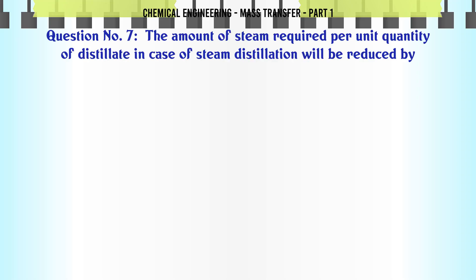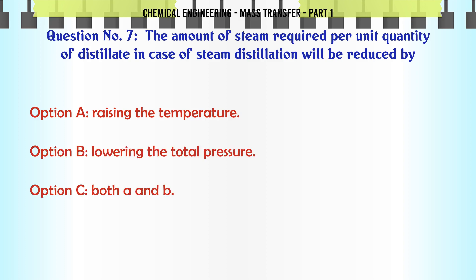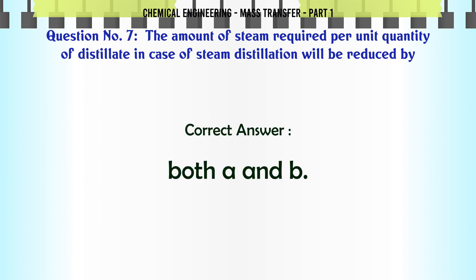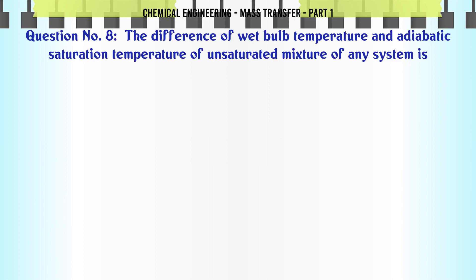The amount of steam required per unit quantity of distillate in case of steam distillation will be reduced by: A. Raising the temperature. B. Lowering the total pressure. C. Both A and B. D. Neither A nor B. The correct answer is Both A and B.